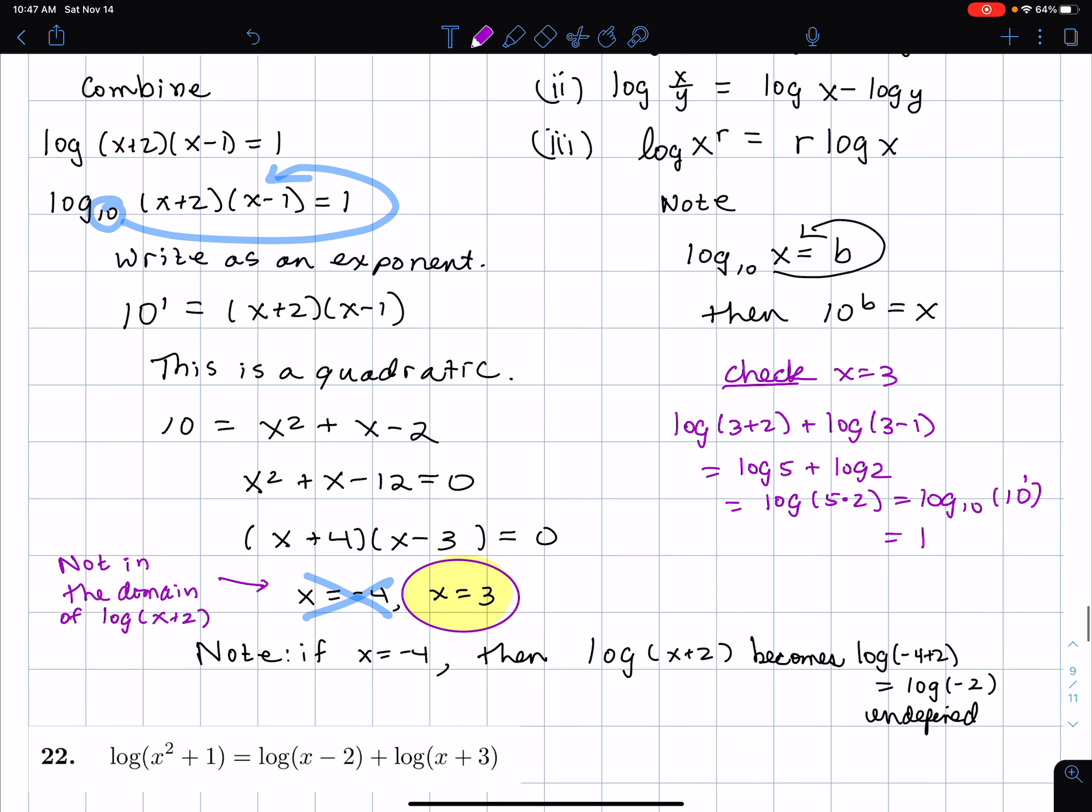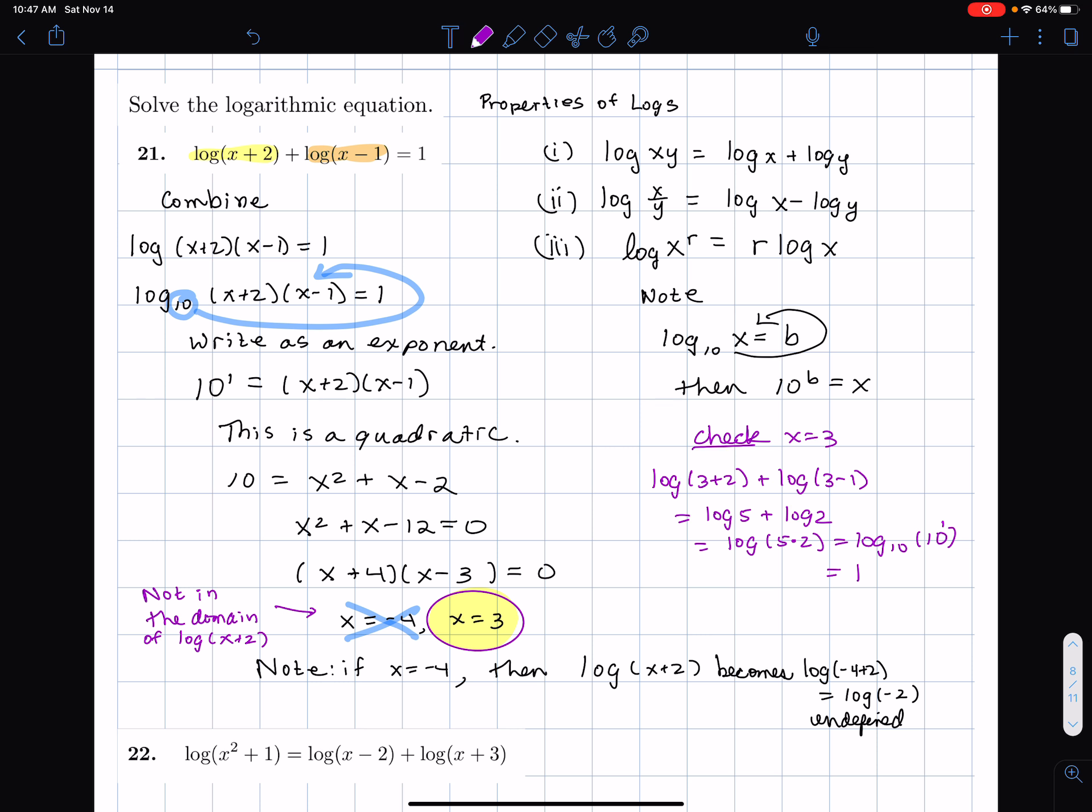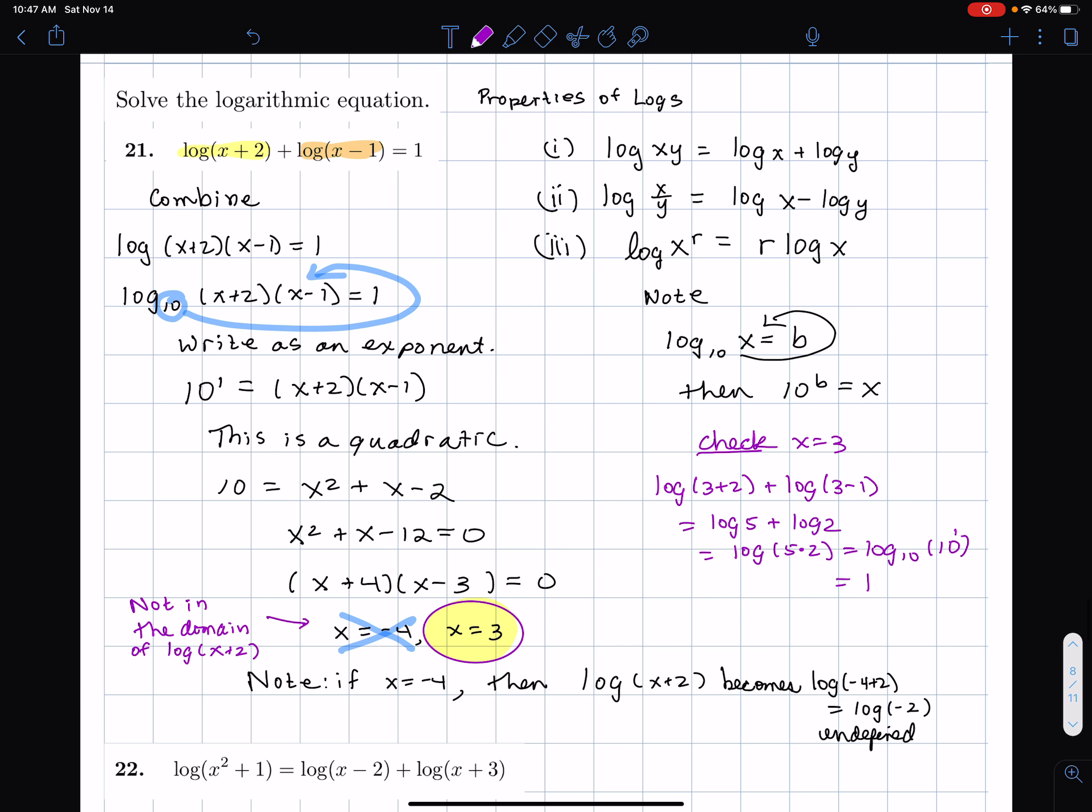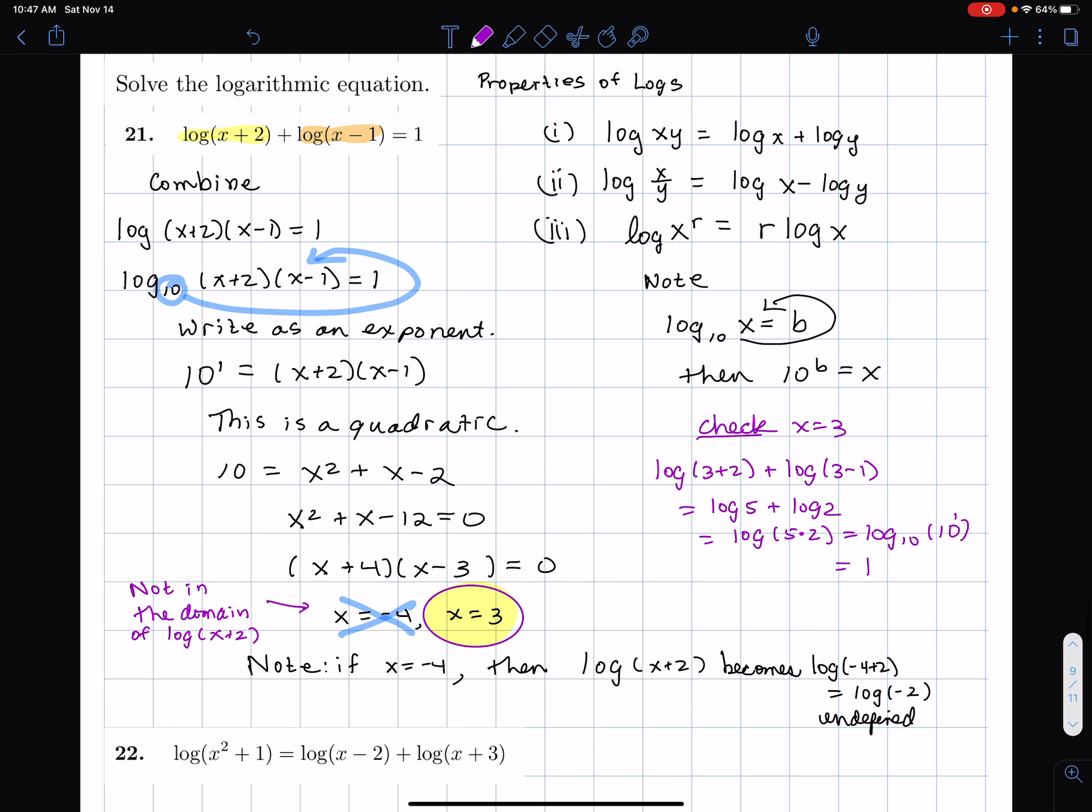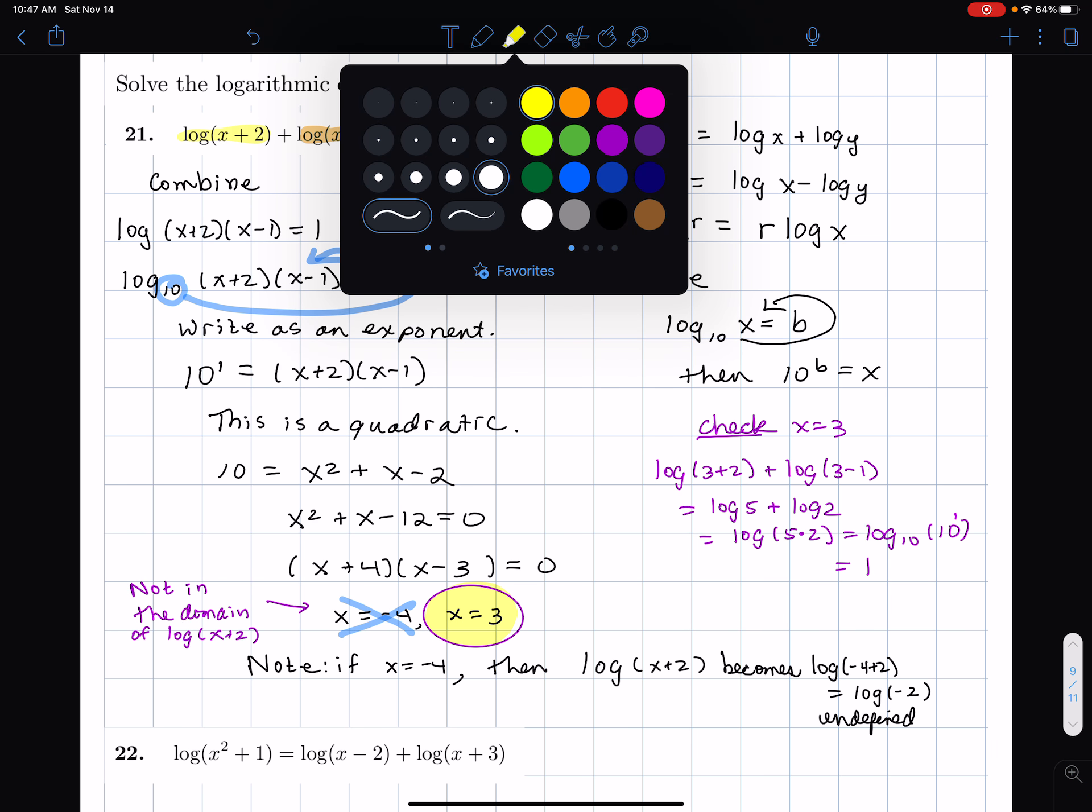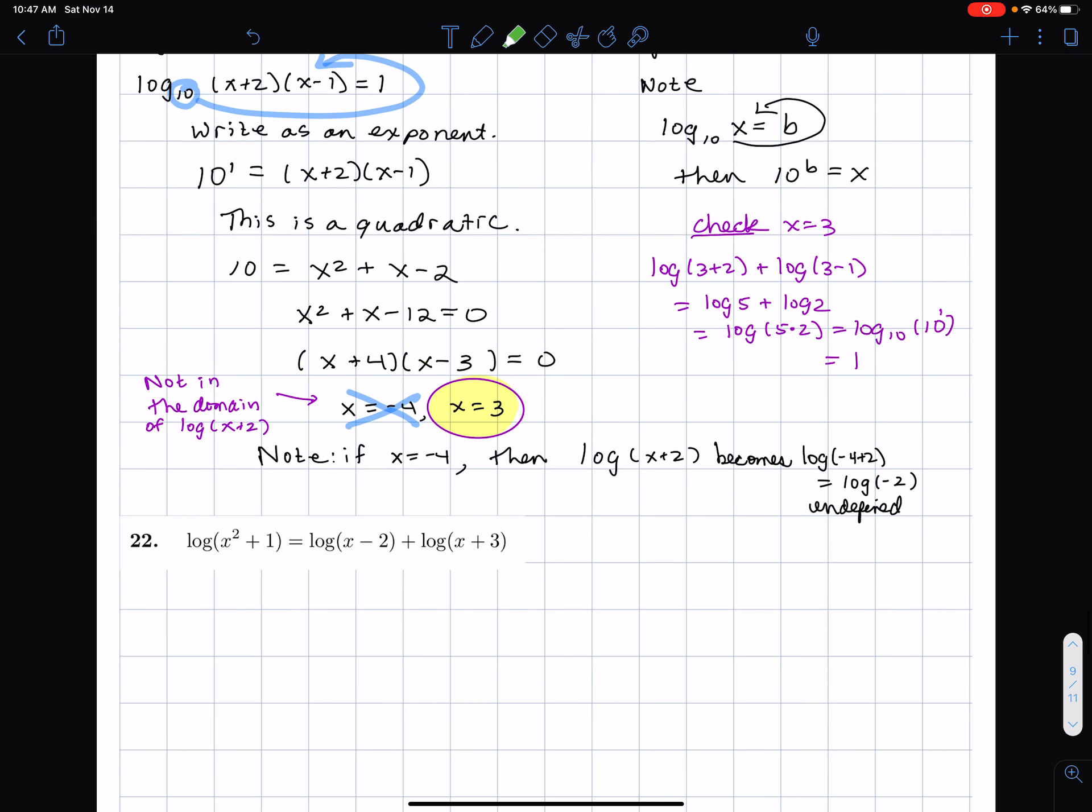All right. Now, start a new video. I think I want to continue on this. Now, look. What happened is we combined and we got logarithm equaling a number. The next problem I'm doing is different. There's, like, two different problems, types of problems when you log with an equation. So the next one's different. See, we ended up getting this important line. I'll highlight it. Log of a bunch of junk equals a number, 1. Here we get something different when we combine.